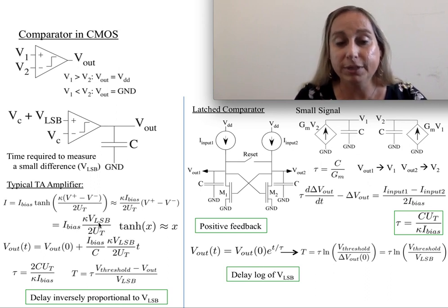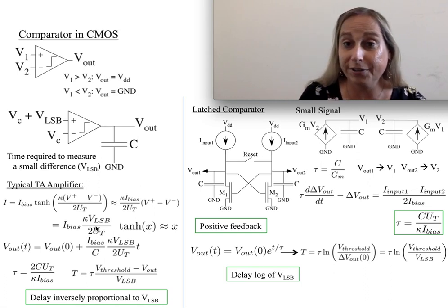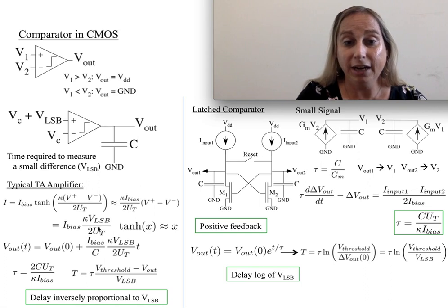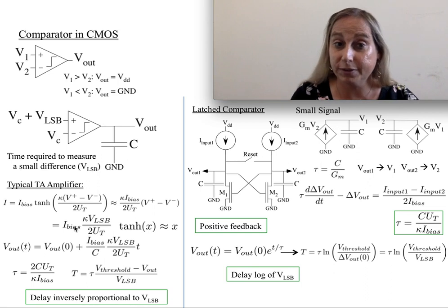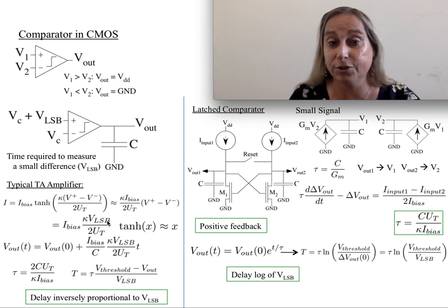Something to notice is the amount of current that I get to use to pull myself in one direction or another is entirely related to that small voltage. It's also related to the bias current, which I do have control over. But I still have some sort of connection between these terms.